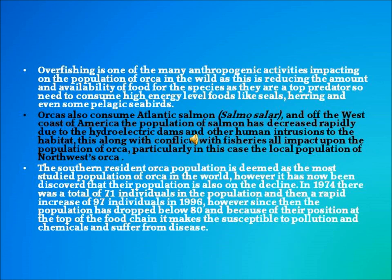Overfishing is one of the many anthropogenic activities impacting the population of orca in the wild, as it is reducing the amount and availability of food for the species. As a top predator they need to consume high energy level foods like seals, herring and even some pelagic seabirds. Orcas also consume Atlantic salmon, and off the west coast of America the population of salmon has decreased rapidly due to hydroelectric dams and other human intrusions to the habitat. This, along with conflicts with fisheries, all impact upon the population of orca.